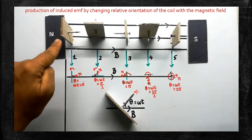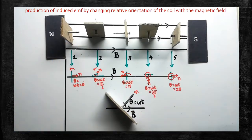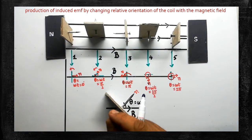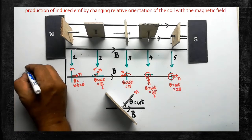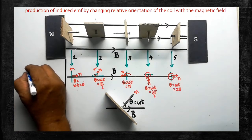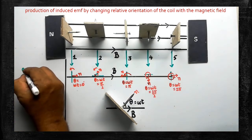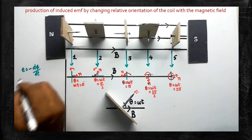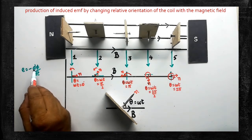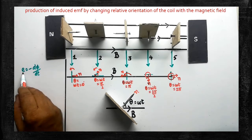To derive the formula for instantaneously varying EMF, we do one derivation. As per Faraday's law, E is equal to minus dΦ/dt. This formula says: when magnetic flux changes with respect to time, EMF will be induced in the coil. Here Φ is the magnetic flux linked with the coil, and N number of turns are wound on the coil.